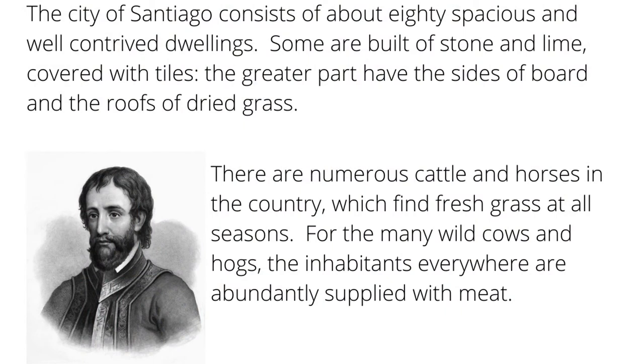The city of Santiago consists of about 80 spacious and well-contrived dwellings. Some are built of stone and lime, covered with tiles. The greater part have the sides of board and the roofs of dried grass. There are numerous cattle and horses in the country, which find fresh grass at all seasons. From the many wild cows and hogs, the inhabitants everywhere are abundantly supplied with meat.